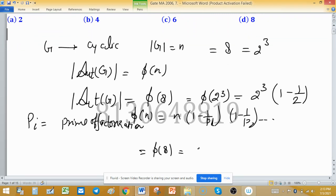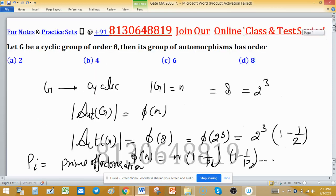The value of Phi 8 will be 2 raised to the power 3, 1 minus 1 upon 2, and this one is 8 into half, which means 4. Now which option is giving 4? Option B is correct.